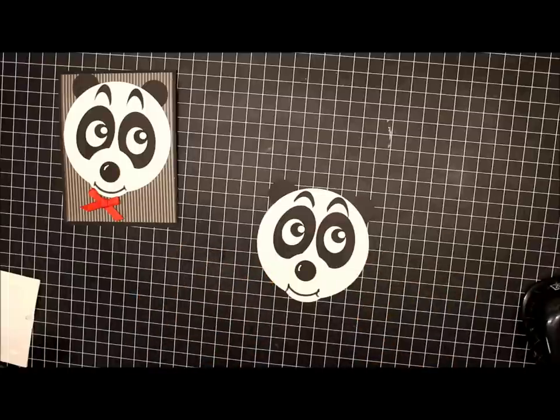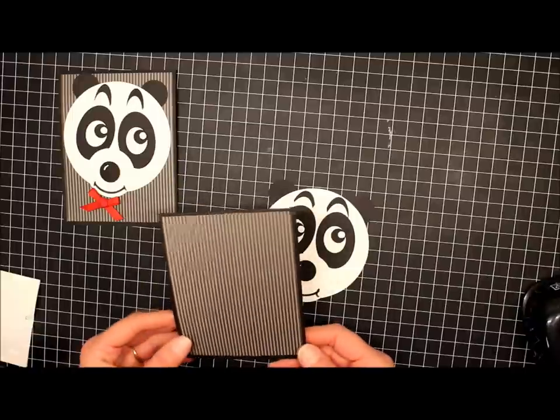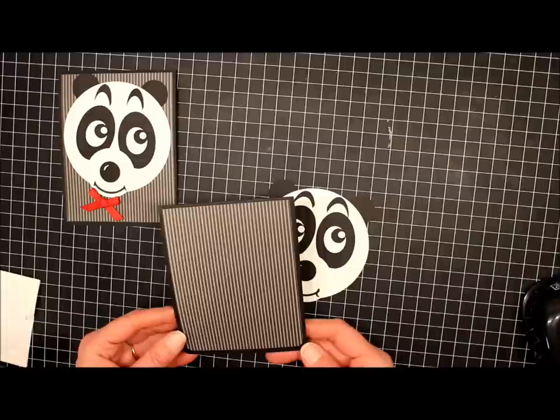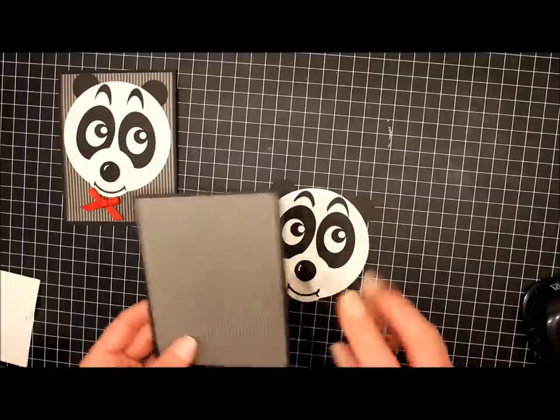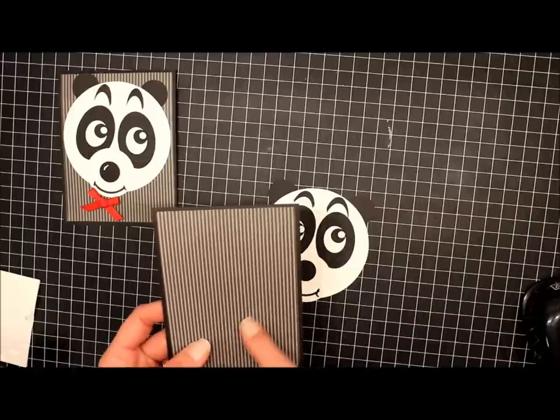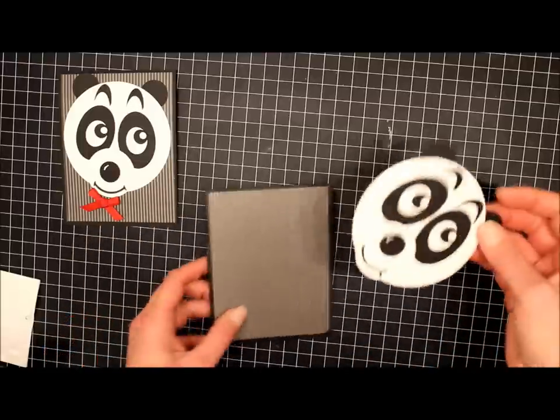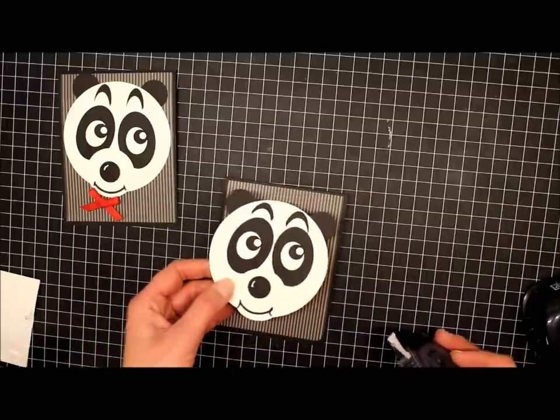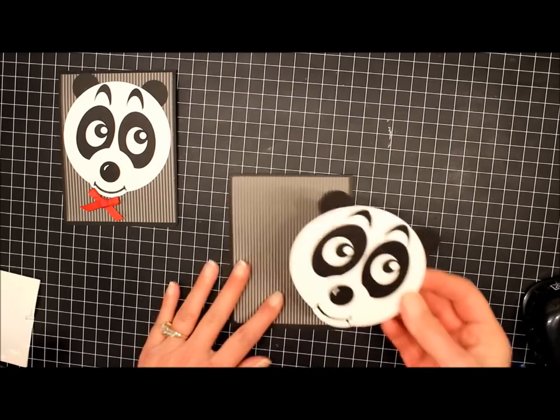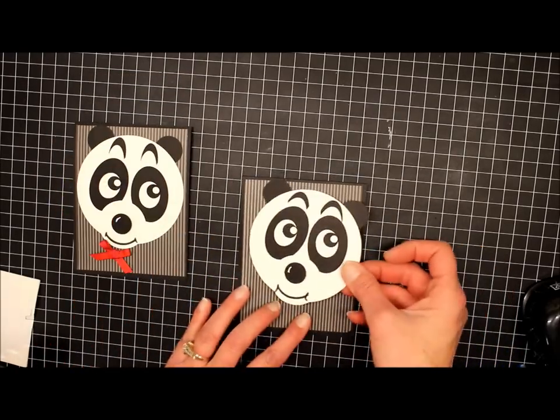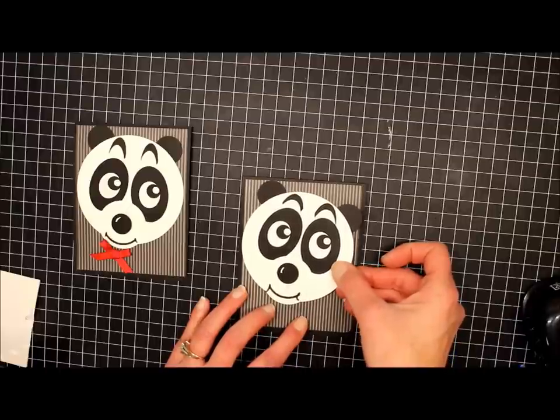Then we're ready to attach him to our cards. Now the card base, I just used a regular standard size card. It measures 4 1⁄4 by 11 inches. I scored it at 5 1⁄2. The Designer Series paper I'm using, it's the Patterns Pack Series. So now we'll attach our face to the front of our card. I put his face a little off center, so we'll kind of tilt his head a little bit too.